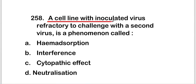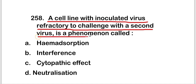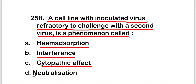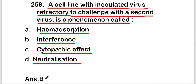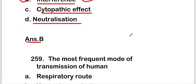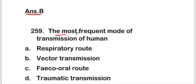The next question: a cell line inoculated with virus that is refractory to challenge with a second virus is a phenomenon called hemagglutination, interference, cytopathic effect, or neutralization? The right answer is option B — interference. This is known as interference, where a cell line inoculated with virus becomes refractory to challenge with a second virus.